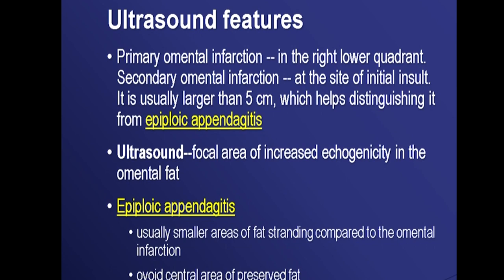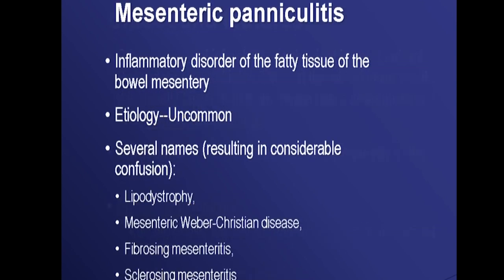Primary idiopathic omental segmental infarction can occur without torsion. On ultrasound, omental infarction appears as a right lower quadrant focal area of increased echogenicity, usually larger than five centimeters — helping distinguish it from epiploic appendagitis, which shows a smaller area of fat stranding. An ovoid central area of preserved fat and a hyperdense central dot representing a thrombosed vessel are better seen on CT.